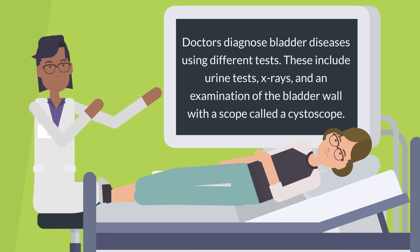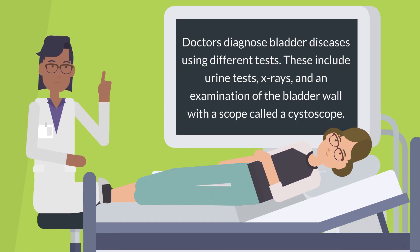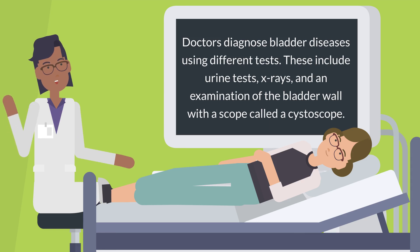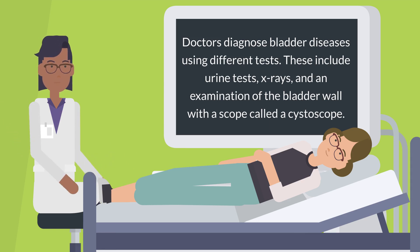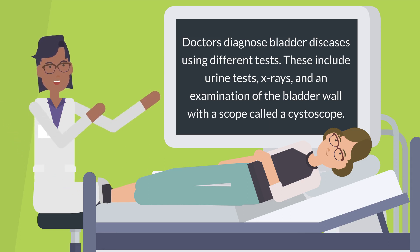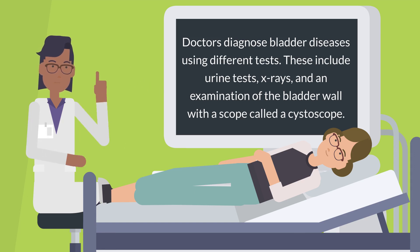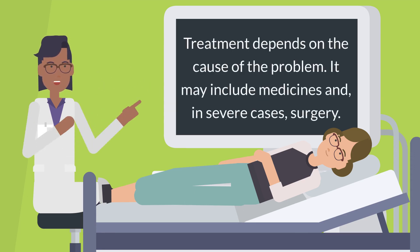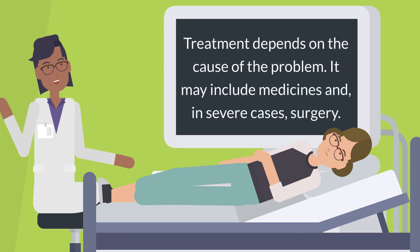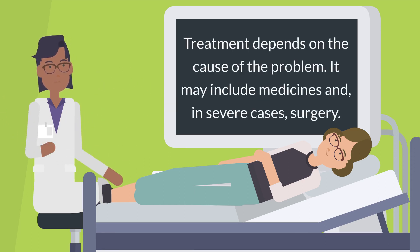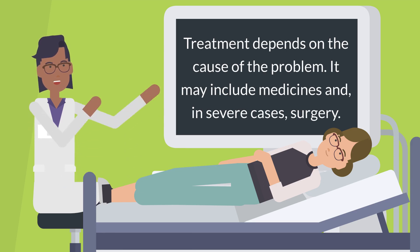Doctors diagnose bladder diseases using different tests. These include urine tests, x-rays, and an examination of the bladder wall with a scope called a cystoscope. Treatment depends on the cause of the problem. It may include medicines, and in severe cases, surgery.